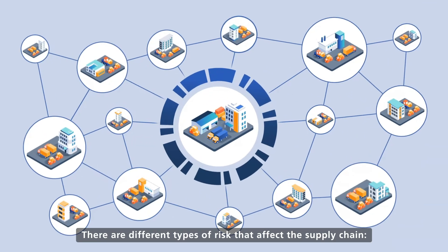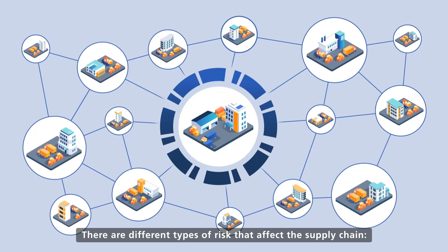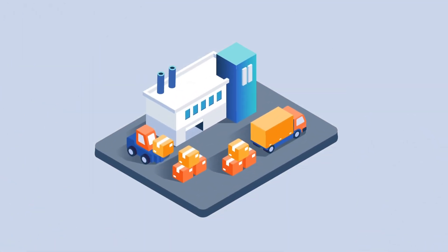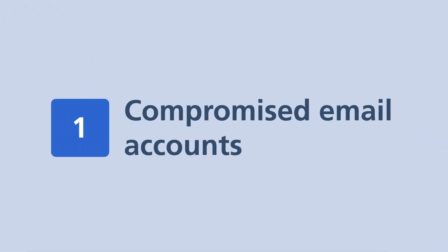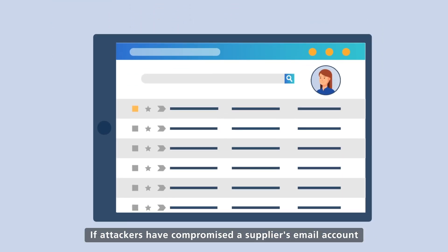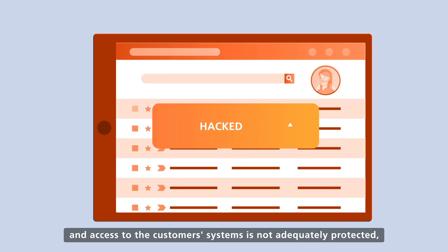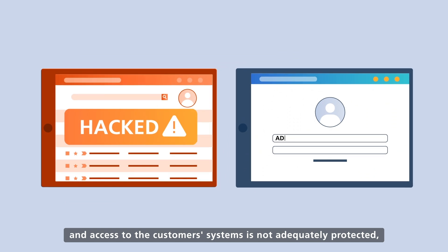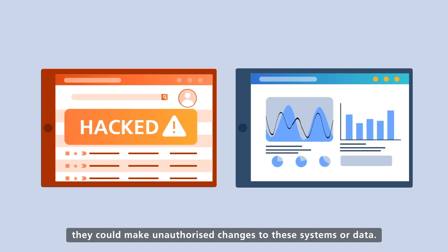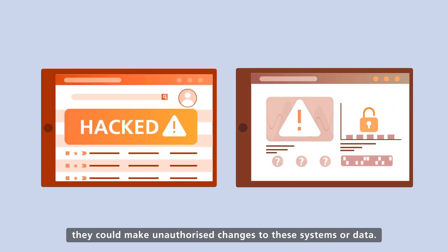There are different types of risk that affect the supply chain. If attackers have compromised a supplier's email account and access to the customer systems is not adequately protected, they could make unauthorised changes to these systems or data.